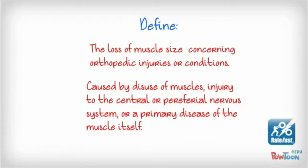It's the disuse of muscles that causes atrophy, for whatever reason. That injury could be affecting a central or a peripheral nerve, or it could be a primary disease of the muscle itself. Also consider that if there is a painful joint, that joint may not be able to exercise normally, and therefore the muscle is not used and it thins.